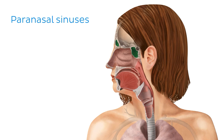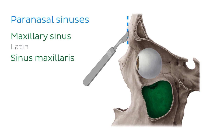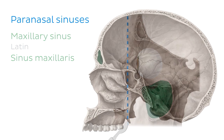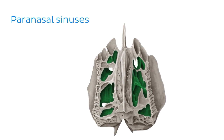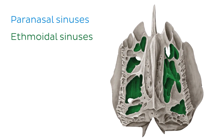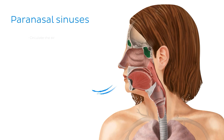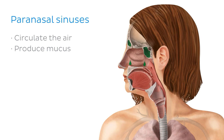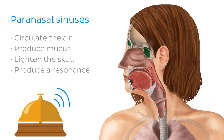There are four paired paranasal sinuses: the maxillary sinuses, and if we cut our skull here sagittally, we can see the frontal sinuses in green, the sphenoidal sinuses, and the ethmoidal sinuses, which we can see here on this image of the superior view of the isolated ethmoid bone. The paranasal sinuses are air-filled cavities situated around the nasal cavities that help circulate the air that we breathe, produce mucus, lighten the skull, and also produce resonance to amplify our vocalizations.